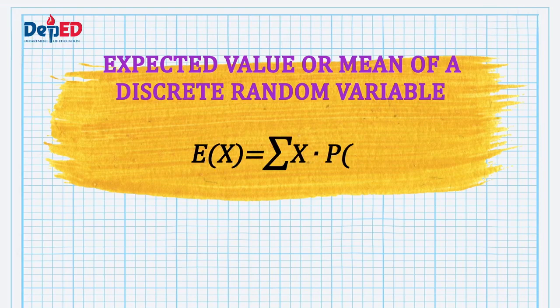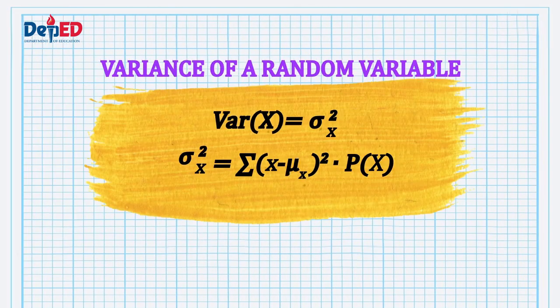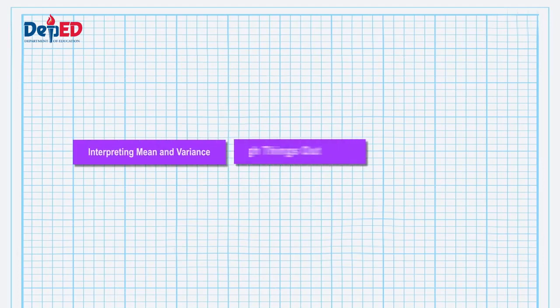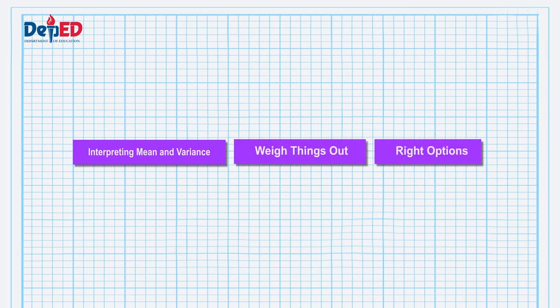Last week, we discussed the expected value or the mean value of a discrete random variable x with a given formula. We also discussed the variance of a random variable which displays the variability or the dispersion of the random variables. It shows the distance of a random variable from its mean, which can be computed using the given formula. Lastly, we focused on the standard deviation of random variable x, which is the square root of the variance. Interpreting the mean and variance of probability distributions will give you an idea on how to weigh things for you to choose the right option.